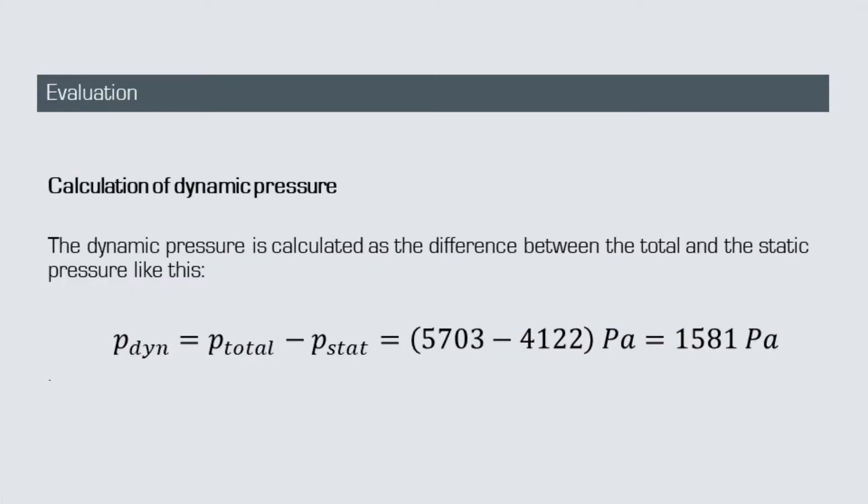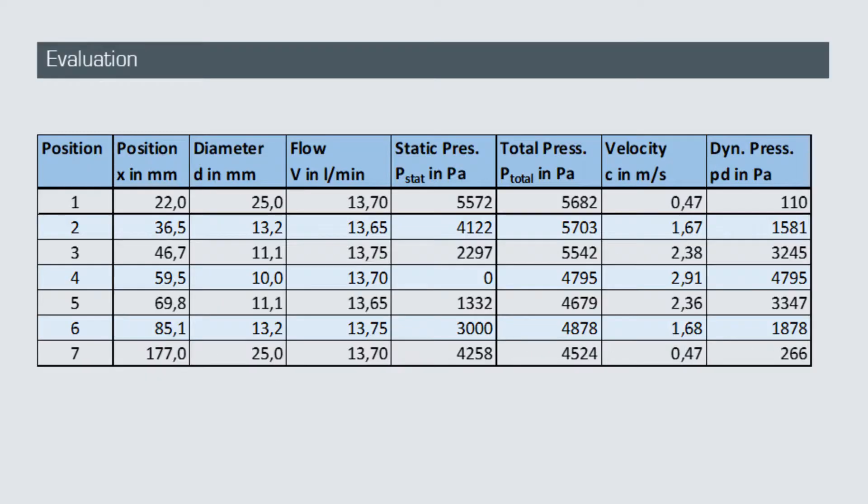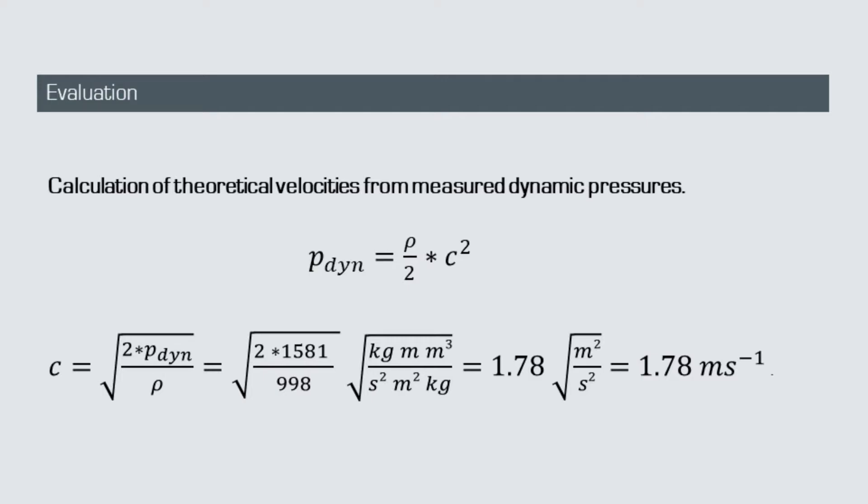The dynamic pressures along the Venturi nozzle can be calculated quite simply as the difference between the measured total and static pressures like so. These dynamic pressures can also be added to our data table. From these dynamic pressures, we can now calculate the theoretical values for the flow velocities by mathematically converting the formula for the dynamic pressure like so.